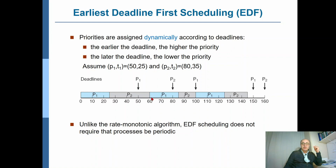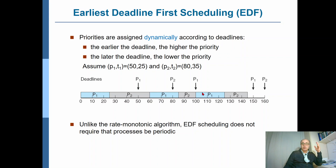Now we schedule p1. Here we have the deadline for p2, but we are already done with that, so no problem. p1 completes at 85, and then we can look at the next occurrence of p2, which arrived at 80. p2 executes for some time, but then p1 arrives again. Now the new deadline for p1 is at 150, but the deadline for this entry of p2 is at 160 — it's further away. So this time we preempt p2 in favor of p1. p1 completes.